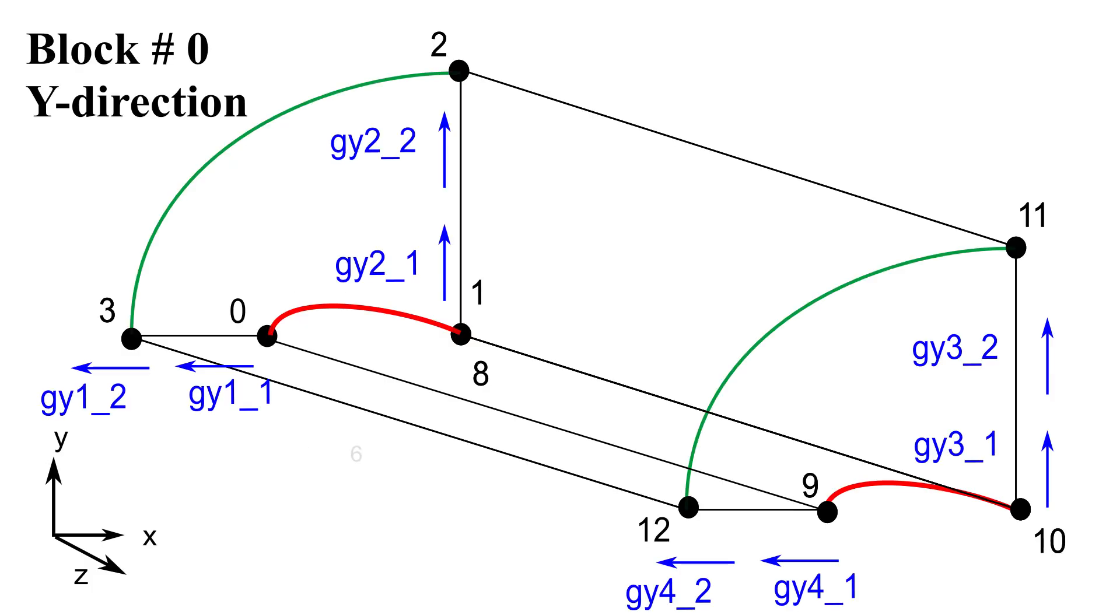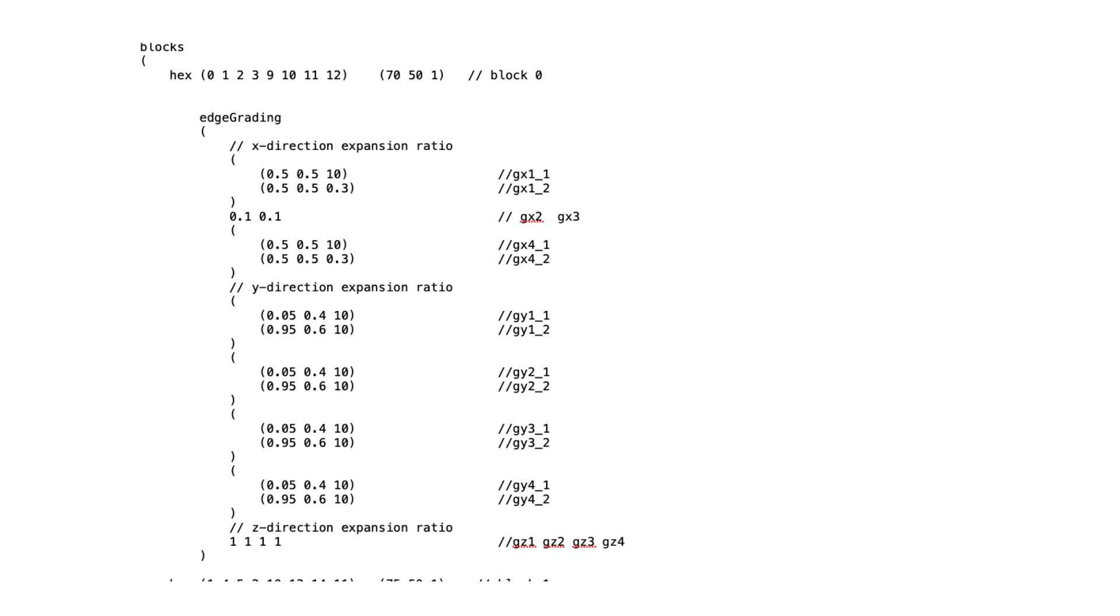And regarding the Y edges cell distribution, we used an edge grading function to split each Y edge into two parts. The first part represents about 5% of the total edge length, and the second part takes the remaining 95%. This configuration helps to condense the cells near the upper and lower surfaces of the airfoil, improving our ability to capture the boundary layer and accurately resolve the near wall flow behavior. And here is how to implement the Y edge cell distribution directly in the BlockMeshDict file.